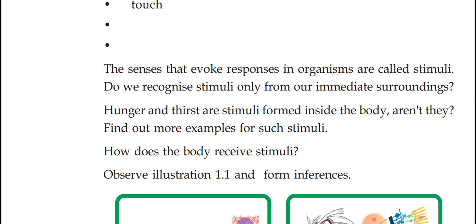External stimuli examples: sound — the sound made by the boy caused the parrots to fly away; light — when you wake up in the morning and switch on your mobile, suddenly a bright light comes and your eyes cannot tolerate it, so you close your eyes or reduce the brightness. Also, the heat from a hot iron box is an external stimuli. Internal stimuli examples include hunger, thirst, and pain.